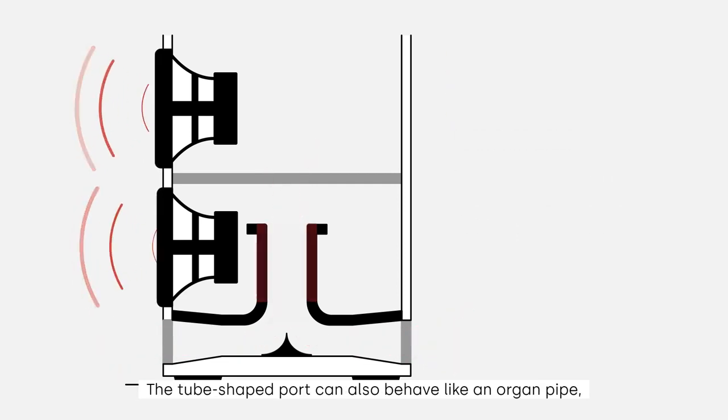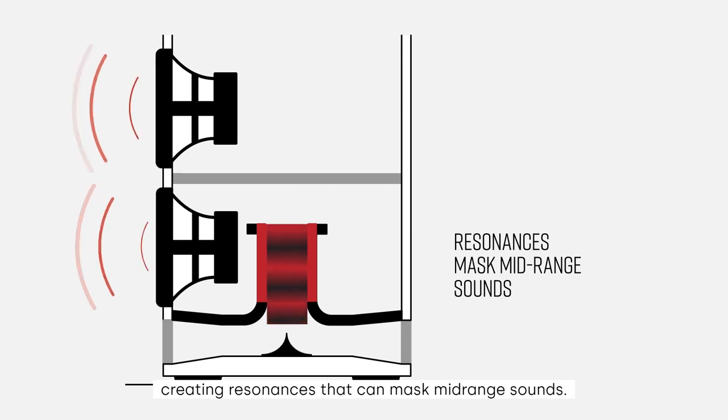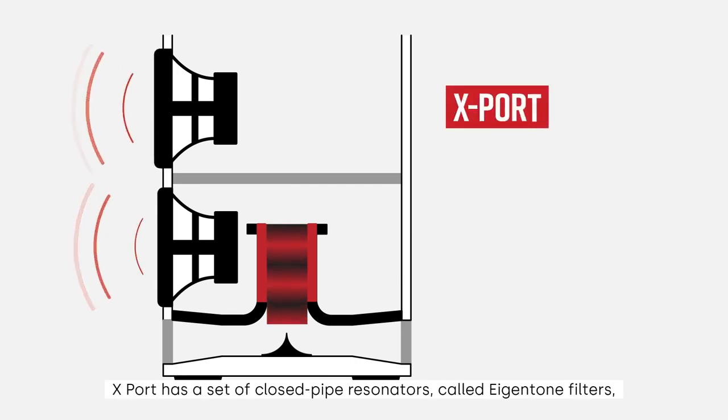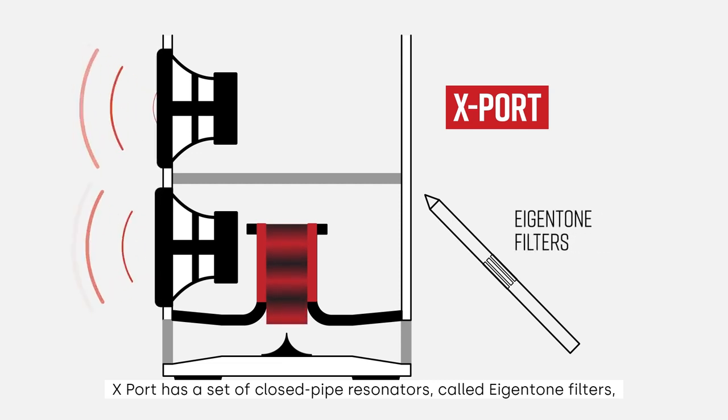The tube-shaped port can also behave like an organ pipe, creating resonances that can mask mid-range sounds. X-Port has a set of closed-pipe resonators, called eigentone filters, which are tuned to absorb unwanted port and cabinet resonances.